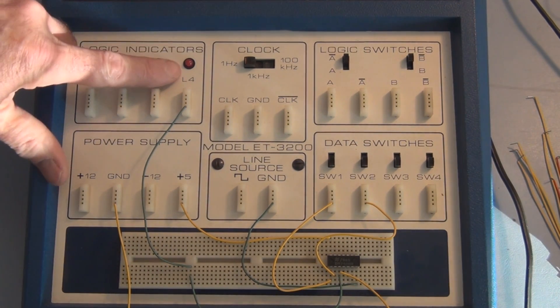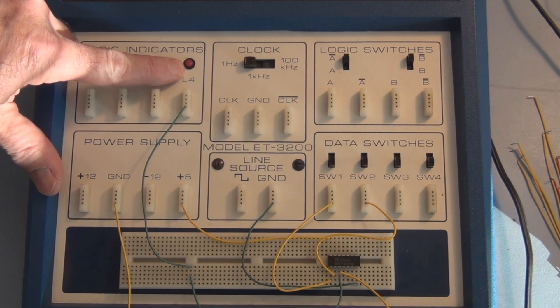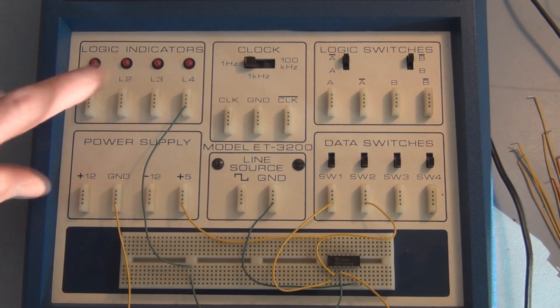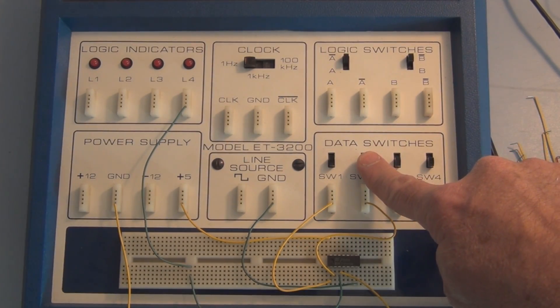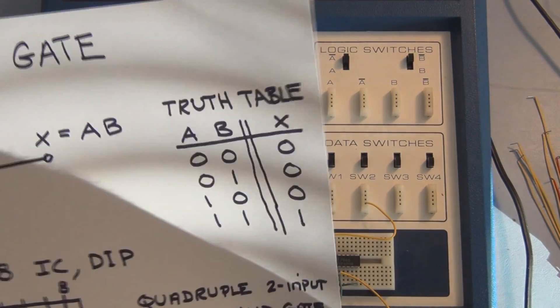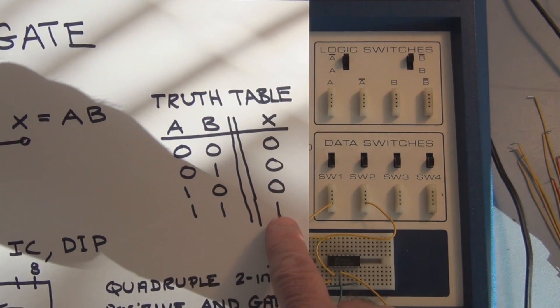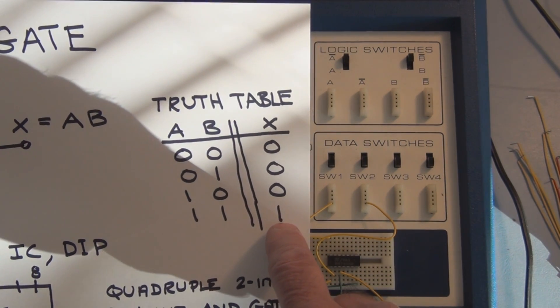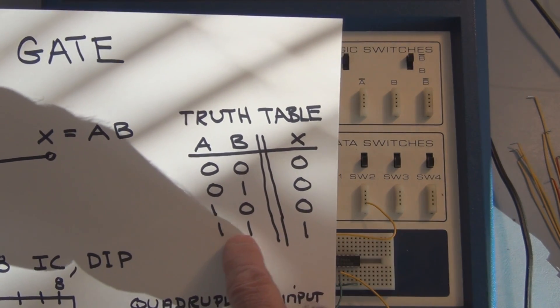This LED here is connected to pin 3, and it will light when both of the inputs are one. Because if you recall from the truth table, an AND gate only has an output of one when both inputs are one.